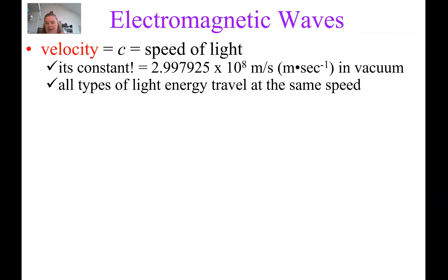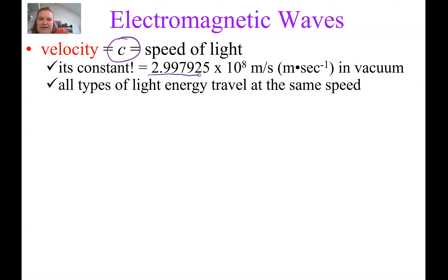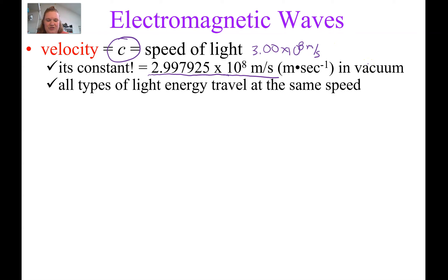The speed of the wave is the speed of light — it's how fast it's going. We abbreviate this with a lowercase c, and it's constant. It's 2.997925 times 10 to the 8th meters per second. We normally write this as just 3.00 times 10 to the 8th meters per second. Very fast. Doesn't change.